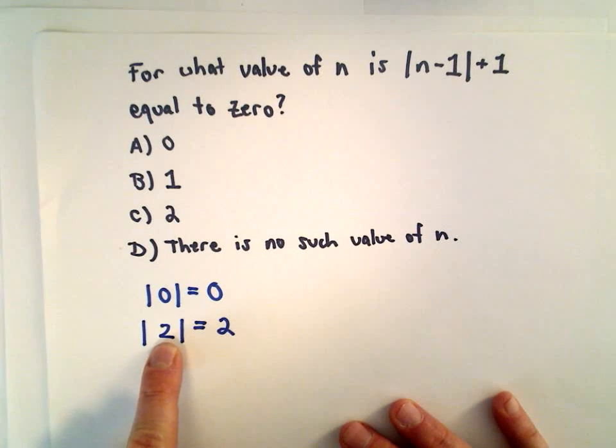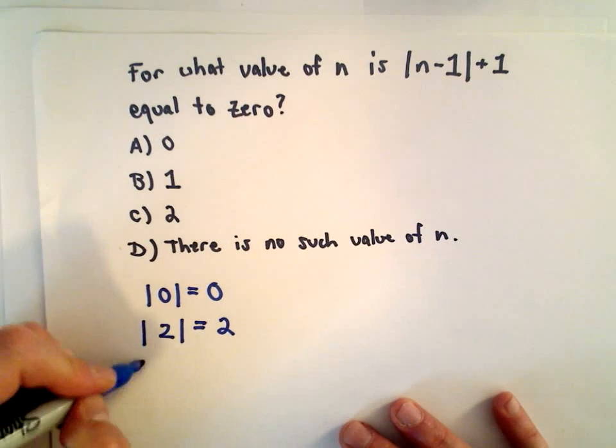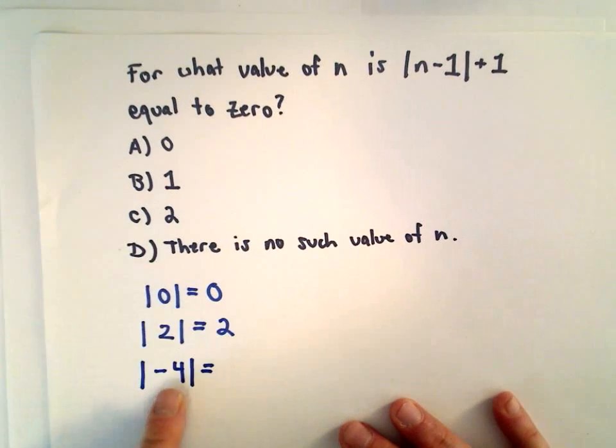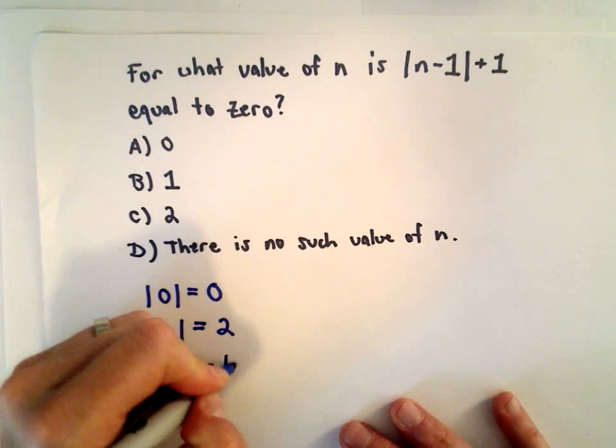So for example, the absolute value of 2 would be 2. If the number's negative, the absolute value of negative 4, again, we just drop the negative sign. So the absolute value of negative 4 is positive 4.